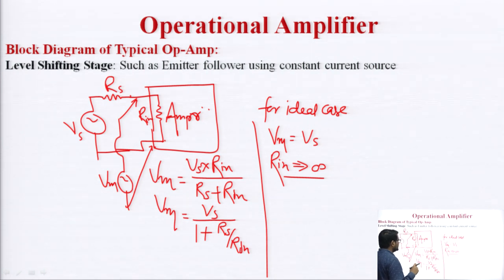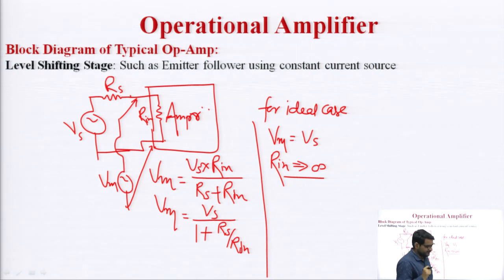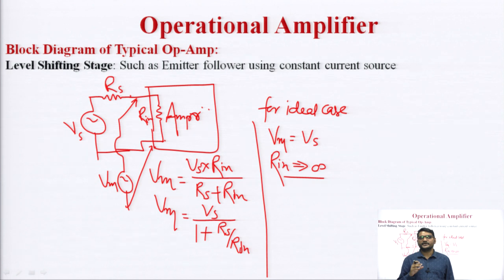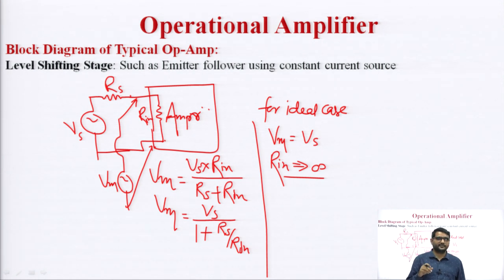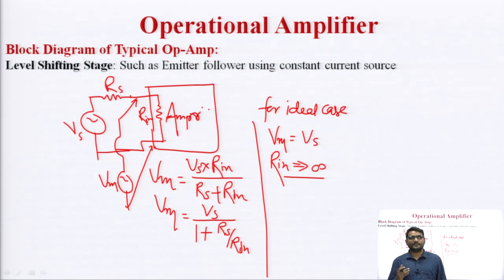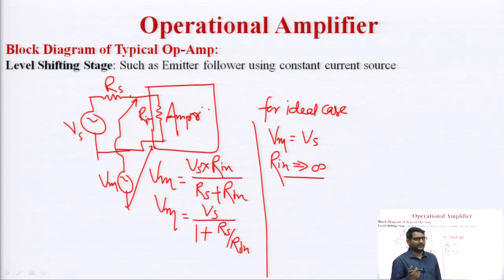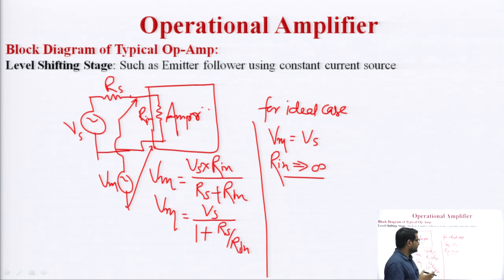For any electronic device, the input impedance should always be high. For example, MOSFETs have high input impedance and operational amplifiers have high input impedance — both can neglect the loading effect.